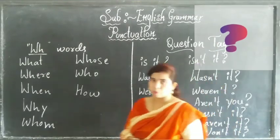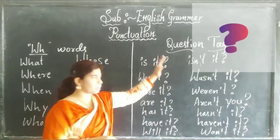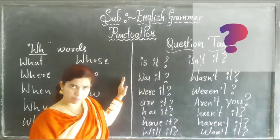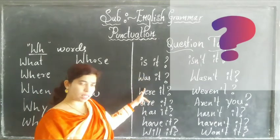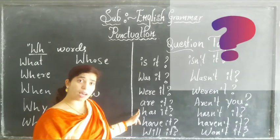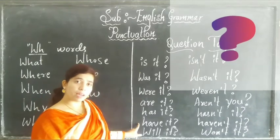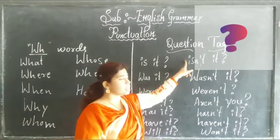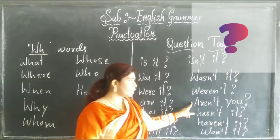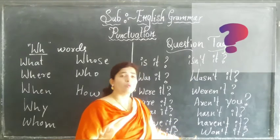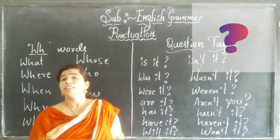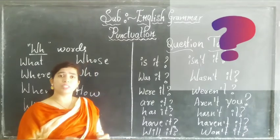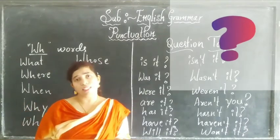Now coming to question tags — is it, isn't it. These are positive and negative forms. When these also appear in statements, we use question marks. Isn't it, wasn't it, weren't it, aren't it, hasn't it, haven't it, won't it — these are the negative question tags. These are all the WH words and question tags which we use with question marks.